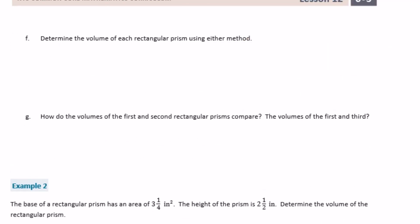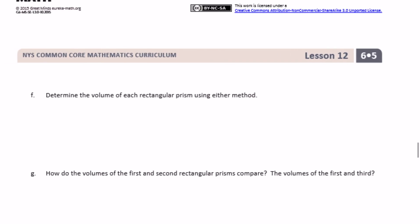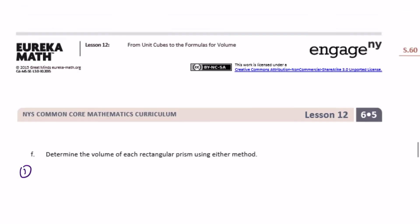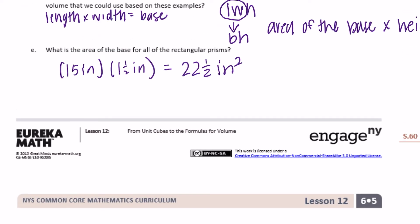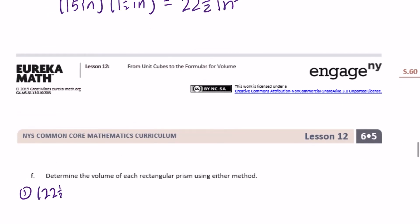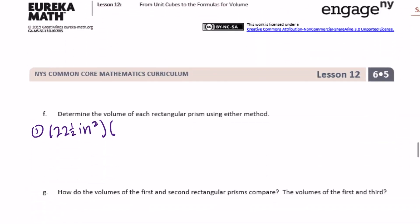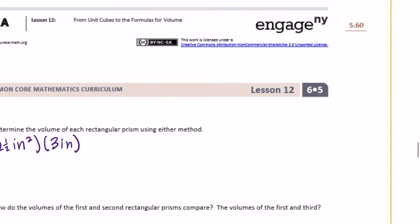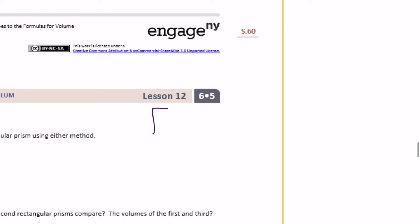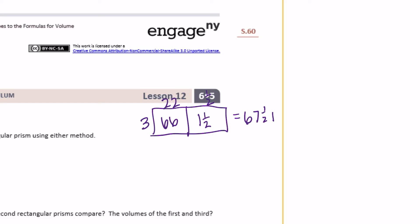Part F: Determine the volume of each rectangular prism using either method. I'm going to use area of the base times the height since we already know the base area. For the first one: twenty-two and a half inches squared by three inches. Using the box method — three times twenty-two is sixty-six, and one-half times three is one and a half. Adding those together gives sixty-seven and a half inches cubed.